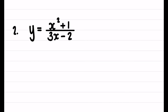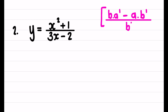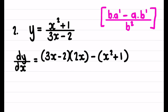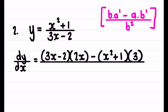For the last quotient rule example, using b times a′ minus a times b′ over b²: let a = x² + 1 and b = 3x - 2. The derivative equals b as-is (3x - 2) times the derivative of a (2x), minus a as-is (x² + 1) times the derivative of b (which is 3, since if you have a coefficient and an x, the derivative is just the coefficient), all over b squared, (3x - 2)².